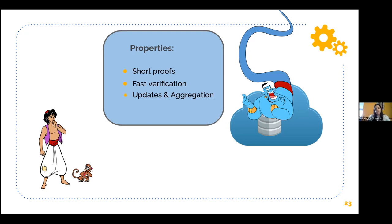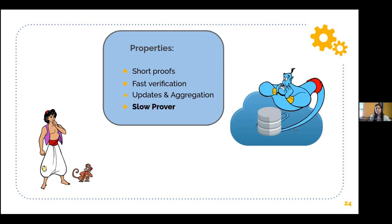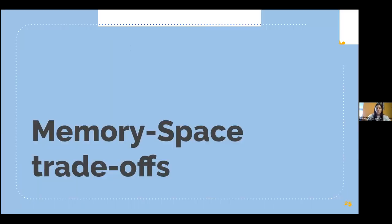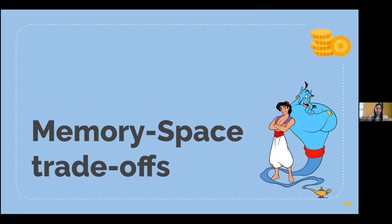But the bad thing with our proofs is that the prover is very slow. It's linear on the size of the vector. So what we do, we have a bunch of results that offer different prover and memory space trade-offs, depending on the vector scheme that they are using.